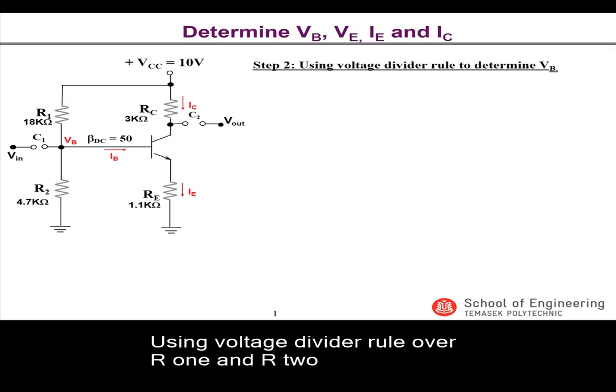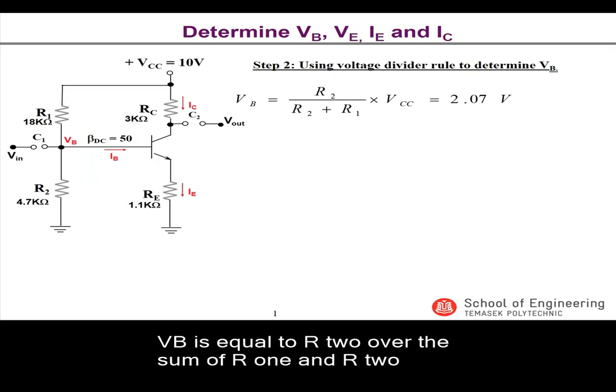Using voltage divider rule over R1 and R2, we find that VB is actually equal to the voltage across resistor R2. Hence, VB is equal to R2 over the sum of R1 and R2 multiplied with the voltage supply Vcc.